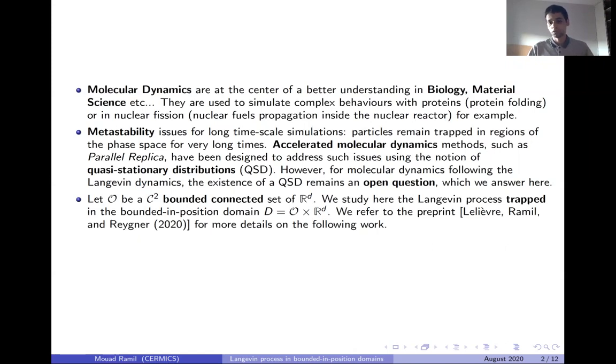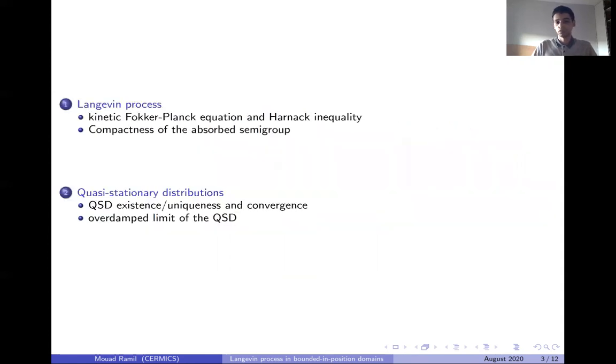For those interested in more details about this work, you can look at our preprint with Tony Lelièvre and Julien Reygner. So the setting is the following: we look at a C2 bounded connected set of Rd named O, and we study the Langevin process trapped in the domain D, which is O times Rd. This work is divided into two parts. The first one focuses on the study of the Langevin process trapped in D and the kinetic Fokker-Planck equation to provide technical tools to further our knowledge about QSDs and other properties.